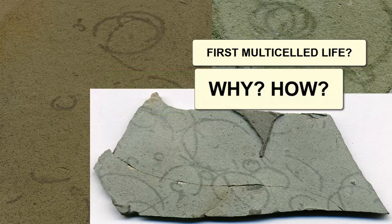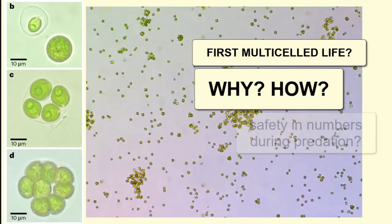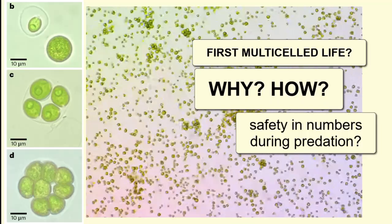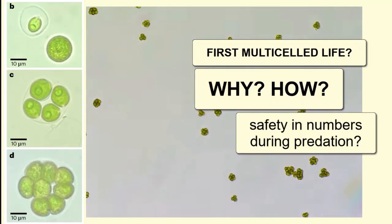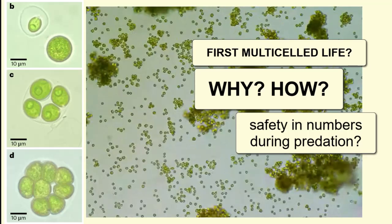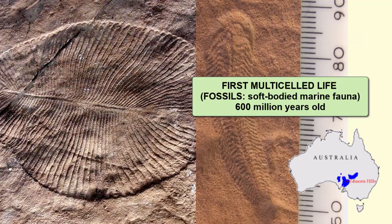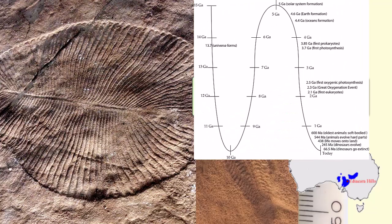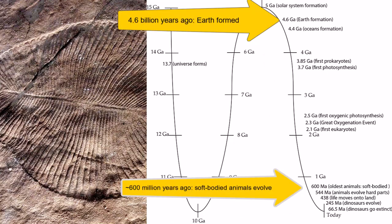What do we think led to the evolution of multi-celled life? Predatory pressures. We can see with bacteria today in petri dishes that when faced with predatory organisms in the same dish, populations that clump together have a better chance of surviving. The oldest evidence of soft-bodied, simple animals was discovered in fossils of marine organisms in 600 million year old rocks in the Ediacaran hills of Australia — that's 4 billion years after Earth formed, and in the last ninth of Earth's history.